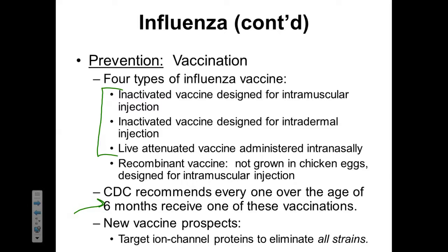The first three versions contain egg albumins and are not appropriate for individuals with egg allergies. The final recombinant version is produced by genetically engineered microorganisms that make the specific surface proteins of the influenza virus — not the entire viral particle itself. New vaccine prospects focus on targeting the ion channel proteins, because those have a much lower rate of mutation, which would make for a much more robust and effective vaccine regimen for influenza.